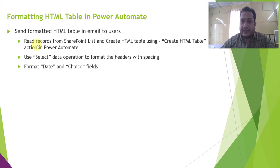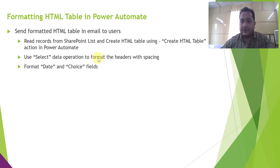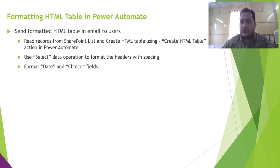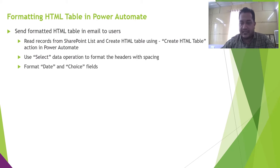In this video we are going to see how to send a formatted HTML table in email to users. First we will read records from a SharePoint list and create an HTML table in Power Automate flow using the Create HTML Table action. After that we will see the data operations Select action, which allows you to format the headers within the email body. Then we will see how you can format date or choice fields within Power Automate while sending the email. Stay tuned till the end of this video.